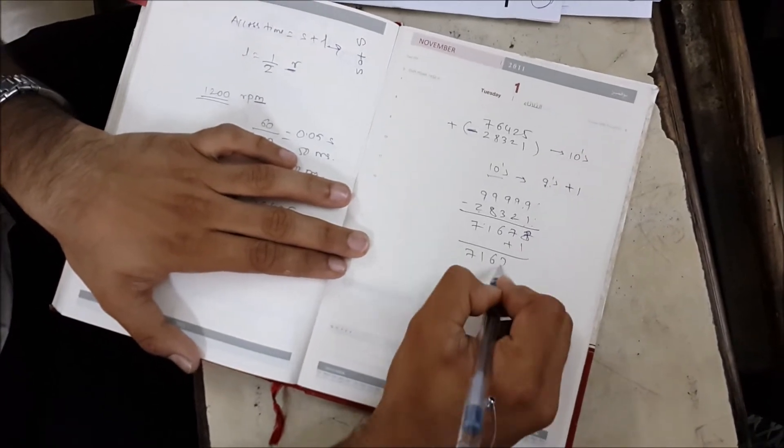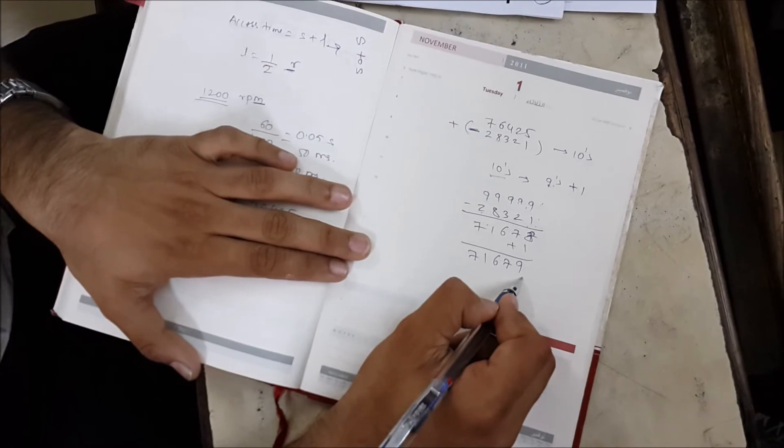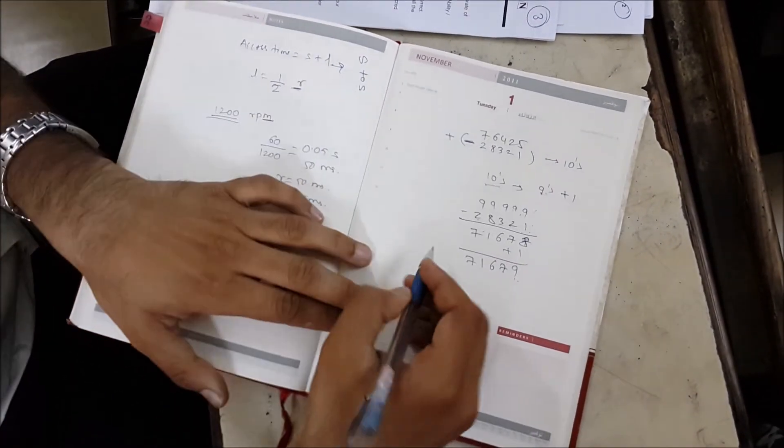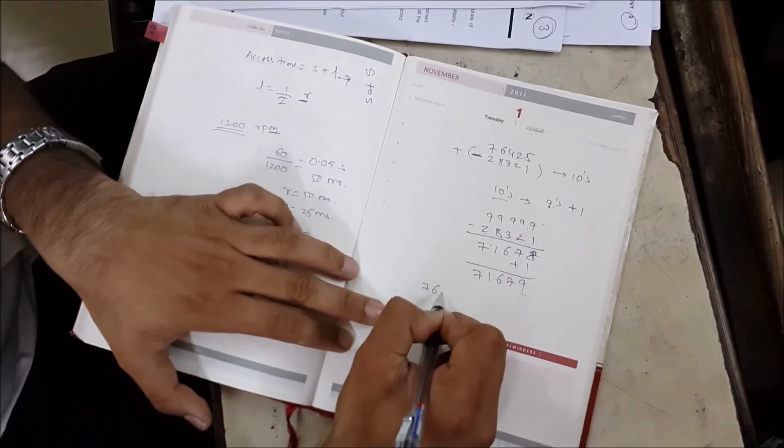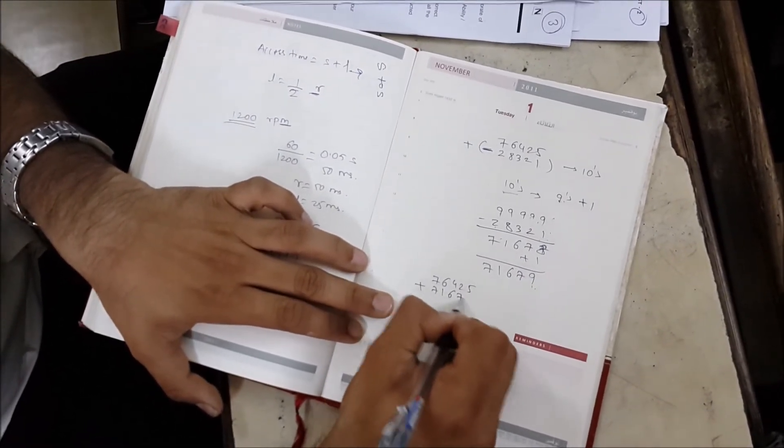So we have to add plus 1, which gives us 71679. Once you've got this number, this is your ten's complement of this negative number. Now take the actual number, which is 76425, plus 71679, and you have to add this number.